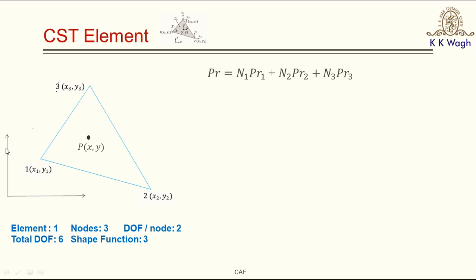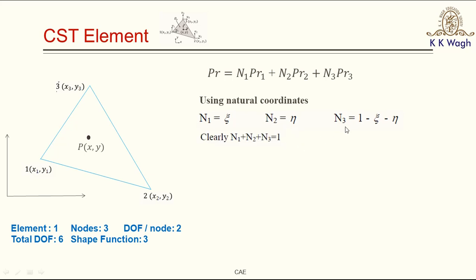The properties at the nodal points are known; we need to find the shape functions n1, n2, and n3. The shape function can be found using two ways: one is using area coordinates and the second using natural coordinates. Using natural coordinates: n1 = ξ, n2 = η, and since n1 + n2 + n3 = 1, we get n3 = 1 − ξ − η. Using area coordinates: n1 = a1/a, n2 = a2/a, and n3 = a3/a, where a1, a2, a3 are the sub-areas of the triangle and a is the total area of the triangular element.